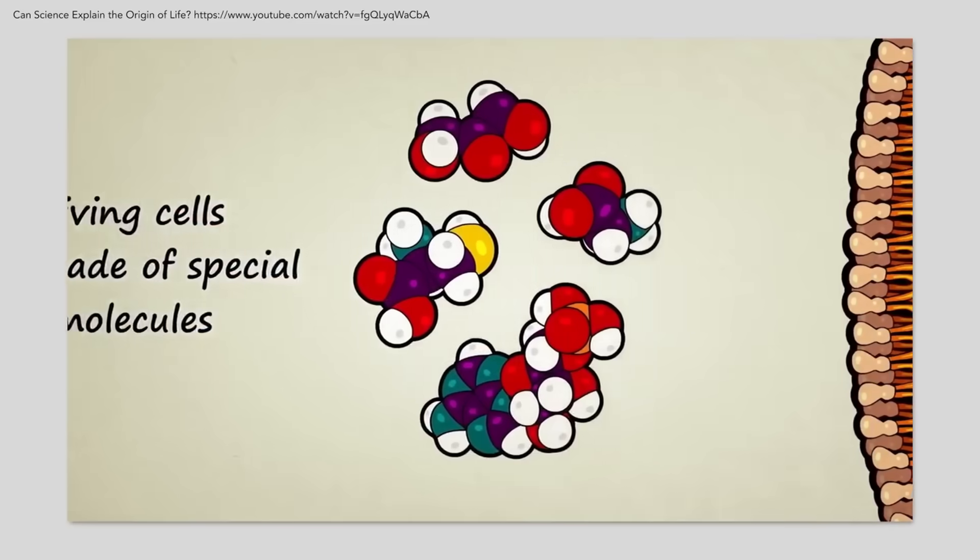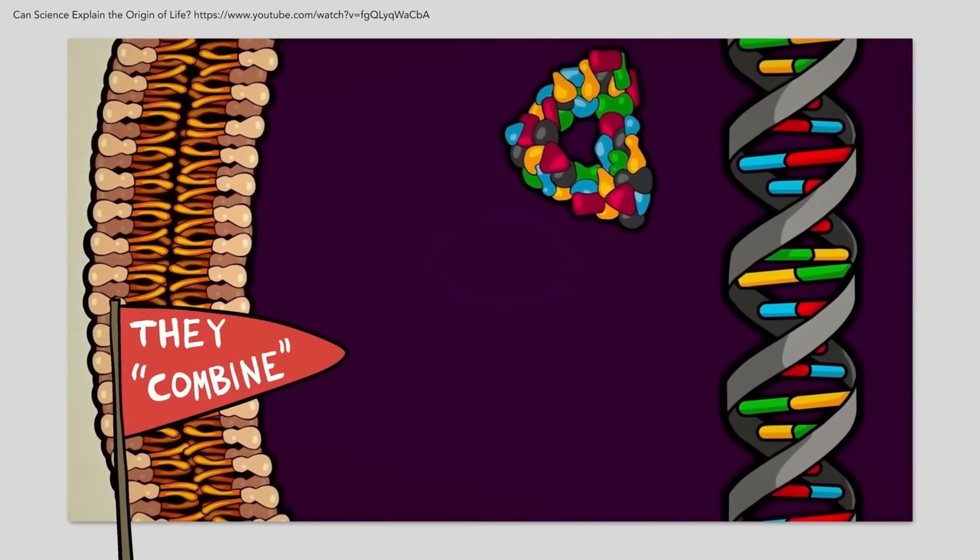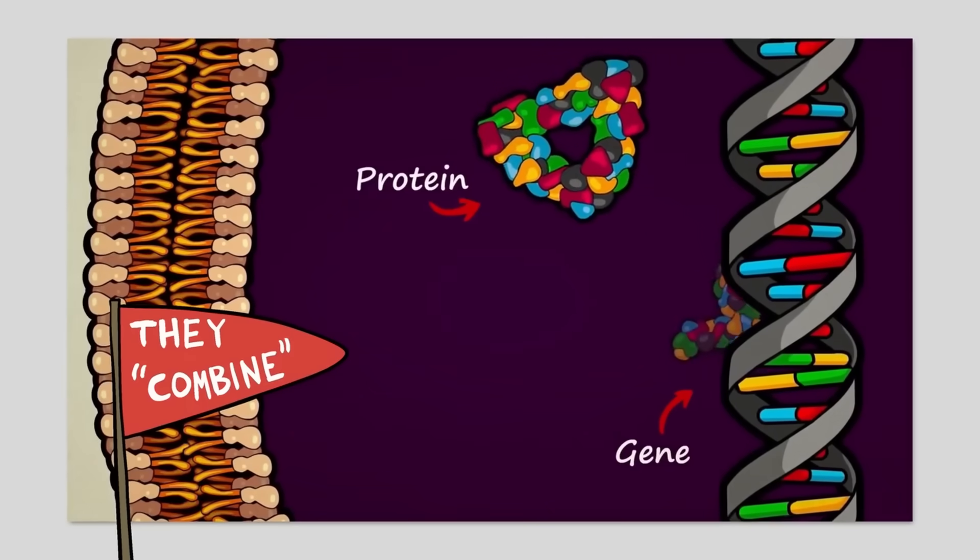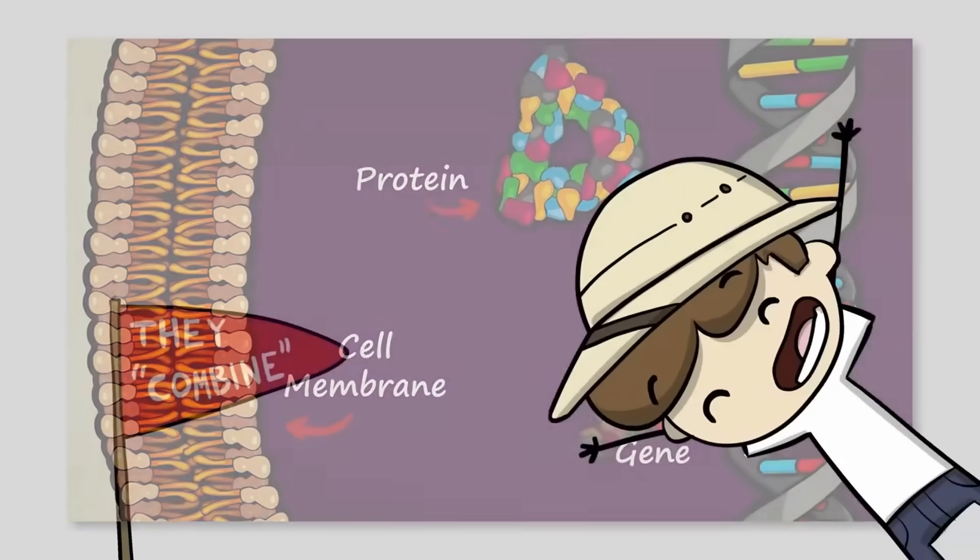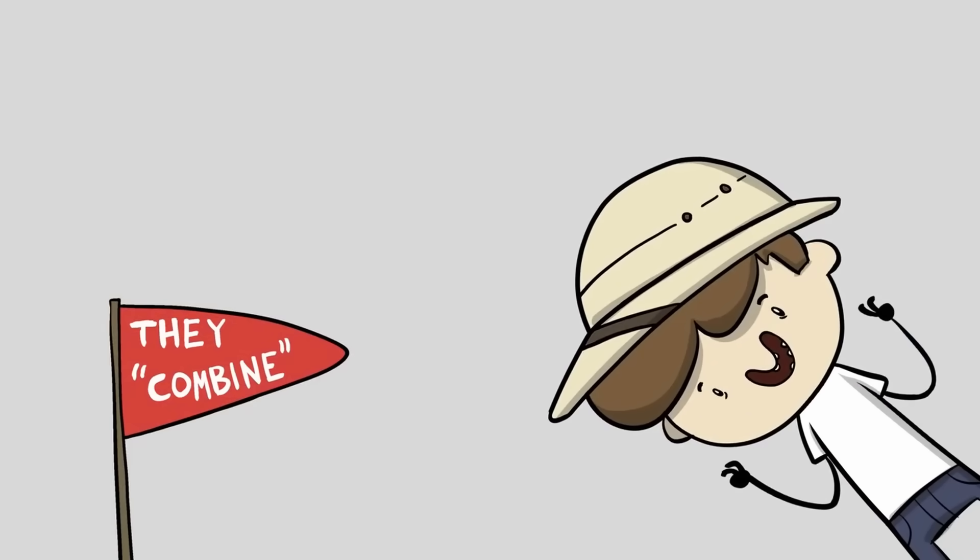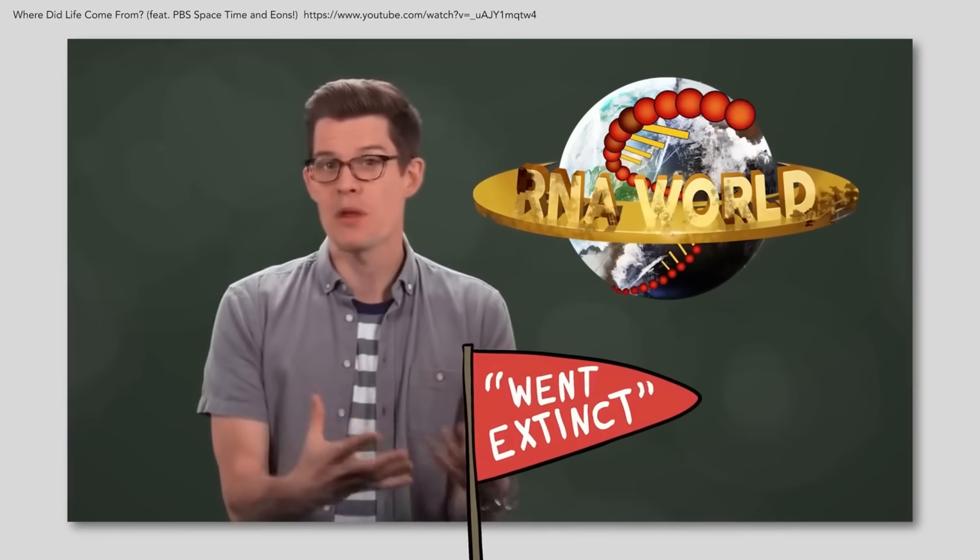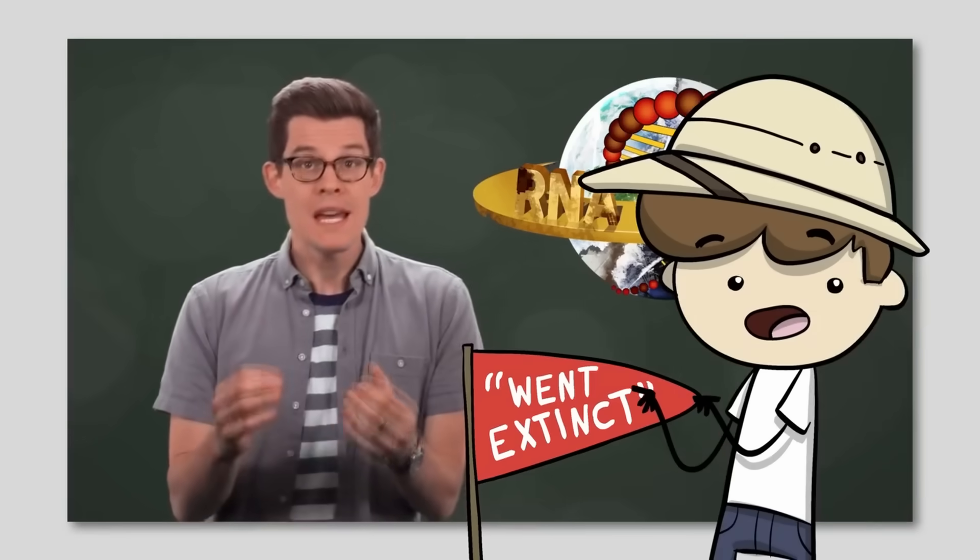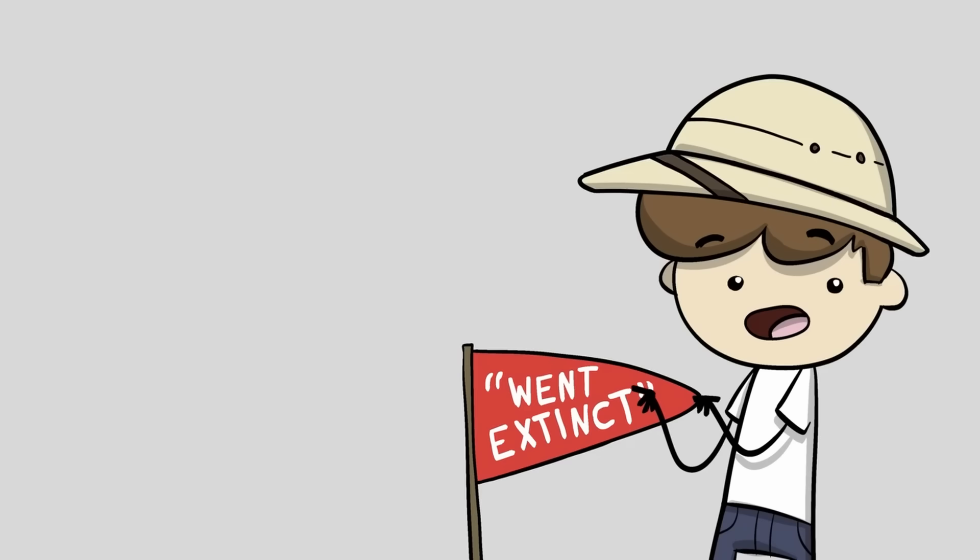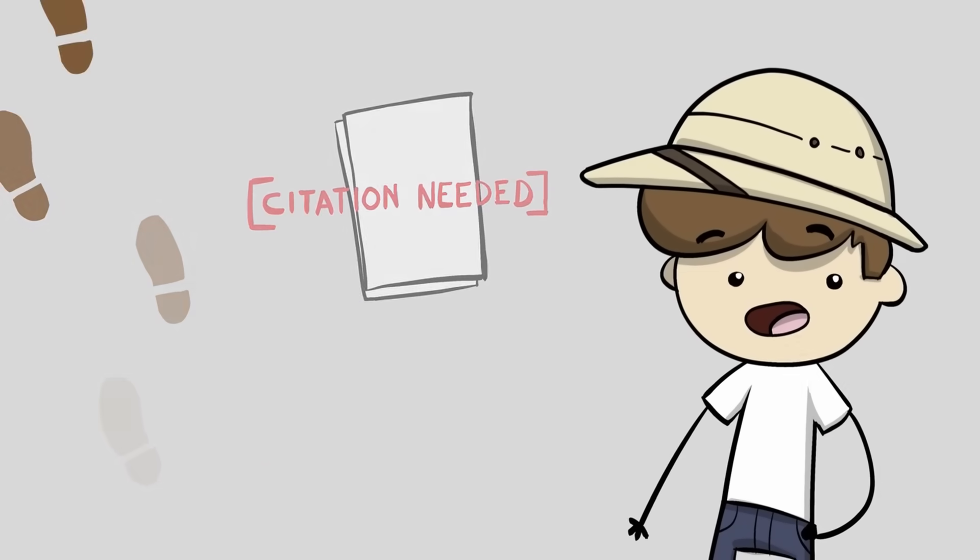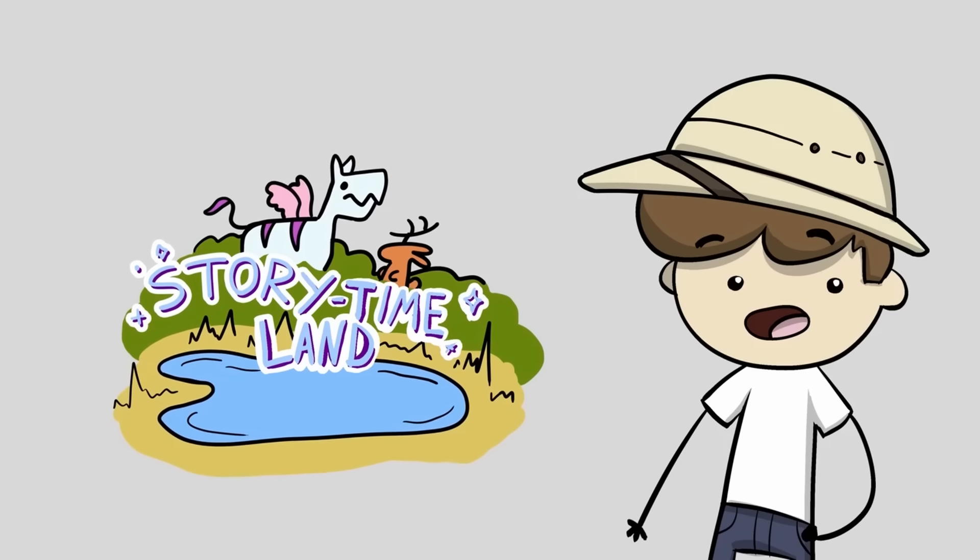These building blocks combine to form highly complex and orderly structures like genes, proteins, and cell membranes. Easy as that. They just combine. Unfortunately, the RNA-only world went extinct more than 3 billion years ago. See how they slipped into the past tense as if these things are proven? Notice there were not a whole lot of sources cited or evidence given, just imagination and hopeful possibility.